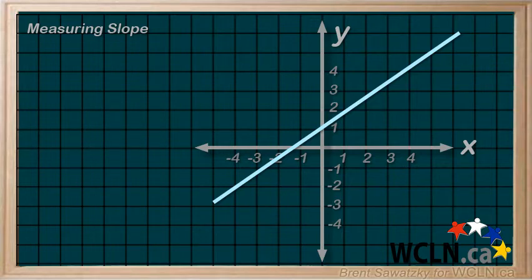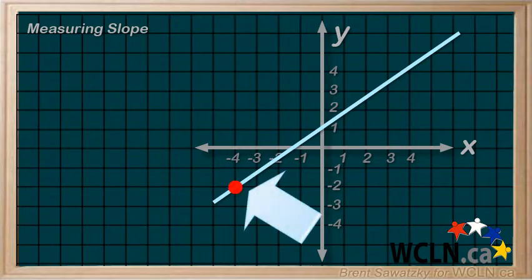Well first, identify two points on the line that are easy to read. That is, they should cross through intersections on the grid, if at all possible. Just something that we can read fairly easily off the graph. Here's a good example point, right on the intersection of grid lines. So, it will be easy to read.